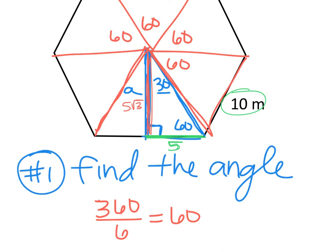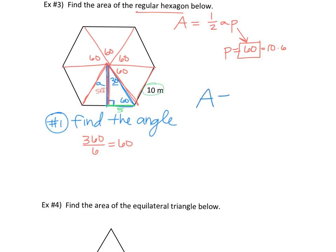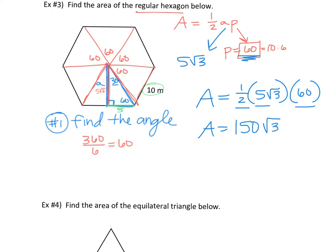Which makes our apothem what? In a 30, 60, 90. What is this apothem going to be? Five rad three. Feels pretty easy when I'm talking you through it, right? When I'm not talking you through it, you have to remember all of those steps. So make sure you start by finding the angle and then look at what information you have from there. So if we're going to do one half AP and we already said our perimeter is 60, what's the apothem? Five rad three.